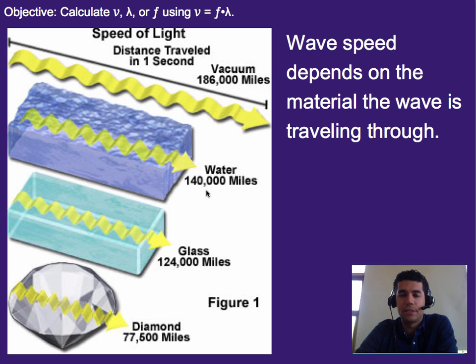Now the last thing I want to tell you is that wave speed depends on the material the wave is traveling through. So what that means is the speed of light is pretty fast. In fact, it's 186,000 miles per second. That means in one second, which is what all these images are about, light in a vacuum will travel 186,000 miles.